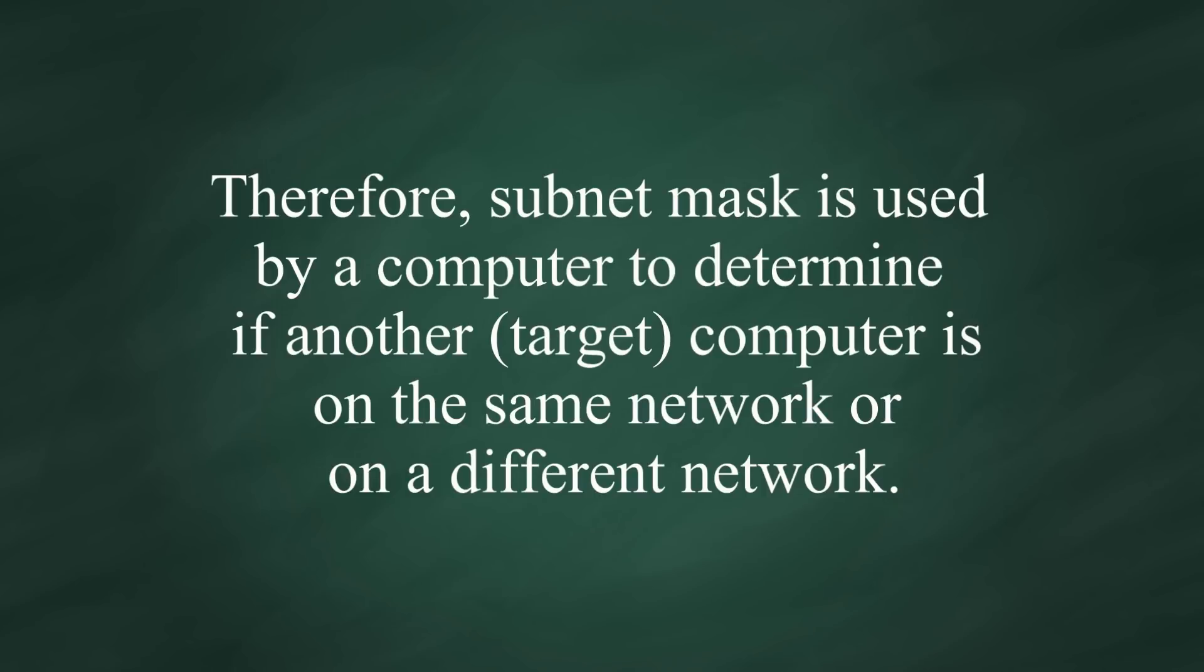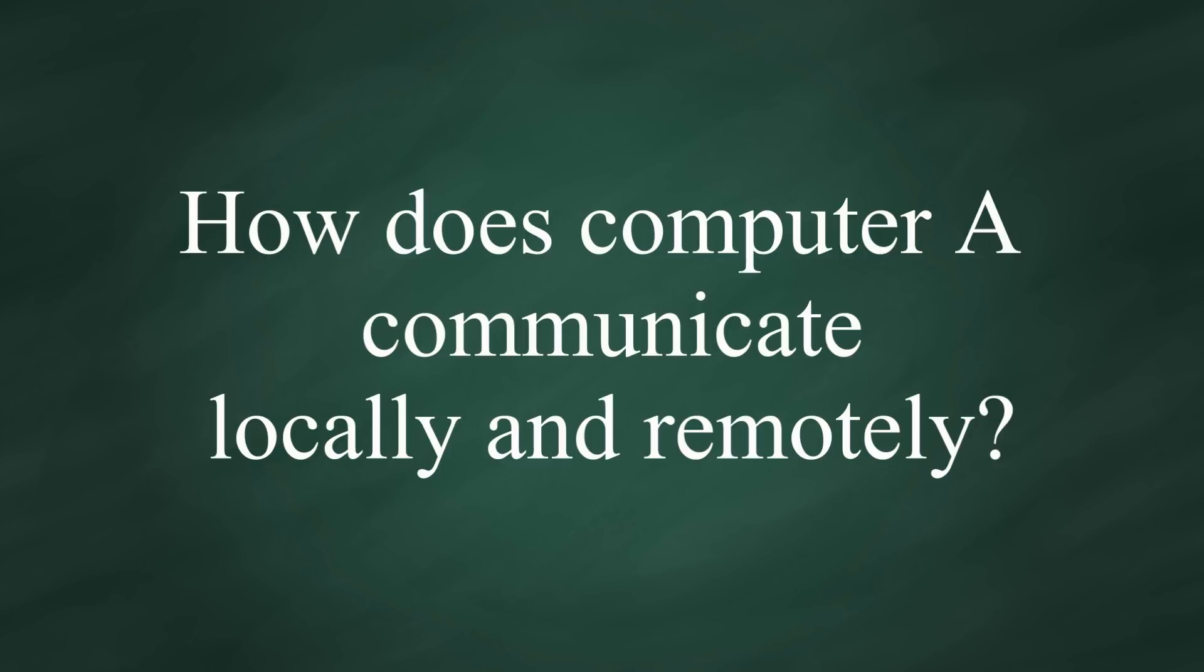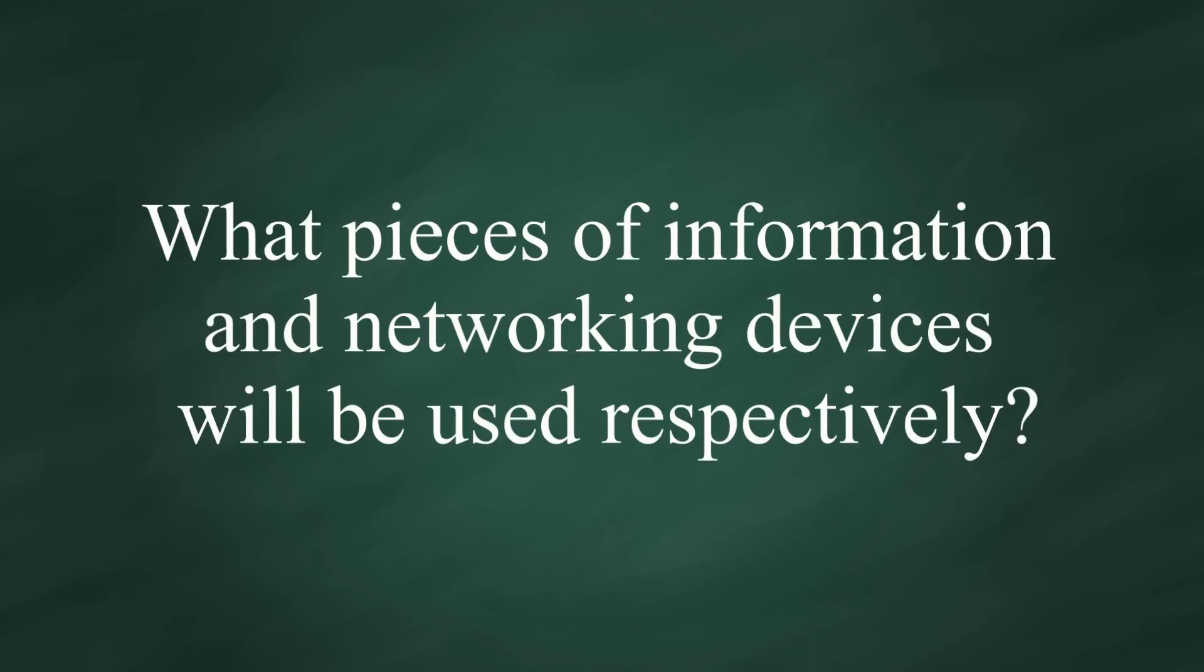Therefore, subnet mask is used by a computer to determine if any computer is on the same network or on a different network. You may say, yes, I get that. Then what's the next? How does computer A communicate locally and remotely? And what's the difference? What pieces of information and networking devices will be used respectively?